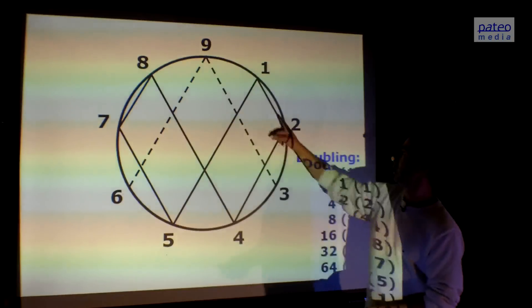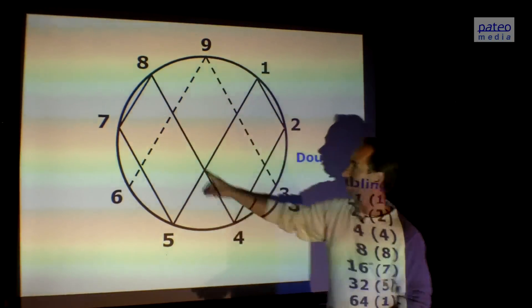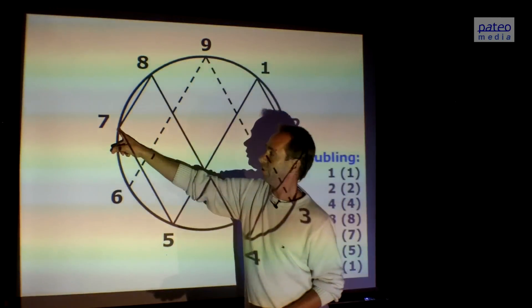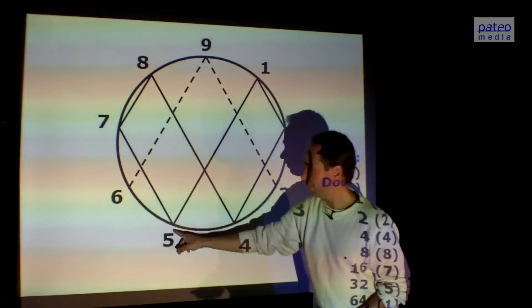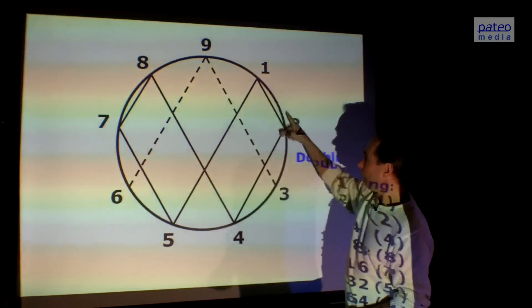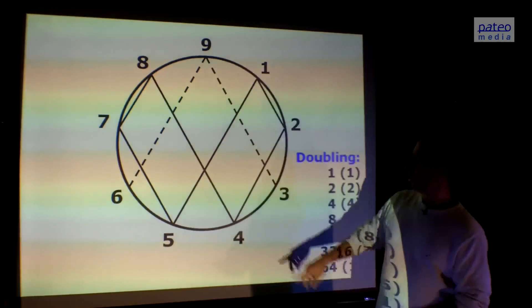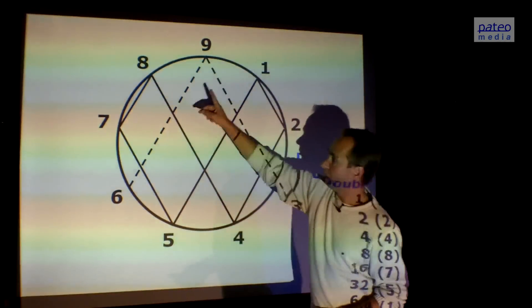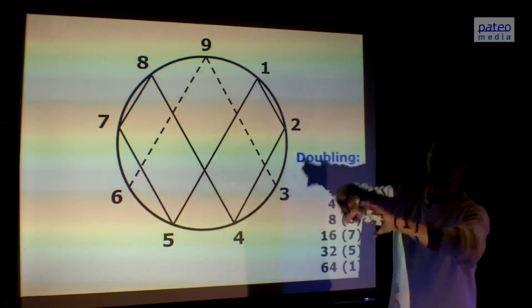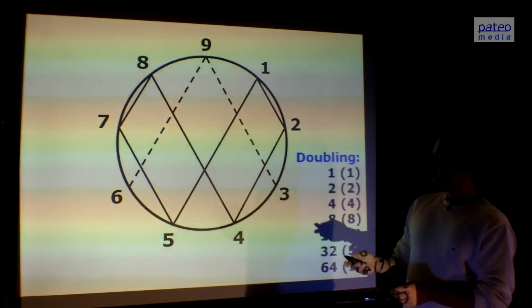If you look at that, you see the double of 1 is 2, double of 2 is 4, double of 4 is 8, double of 8 is 16 which is 7, double of 16 is 32 which is 5, and the double of 32 is 64 which is 1 again. This goes on infinitely, and you can also see the symbol of infinity in this pattern, but now it's rectangular, more square-like. That's doubling.